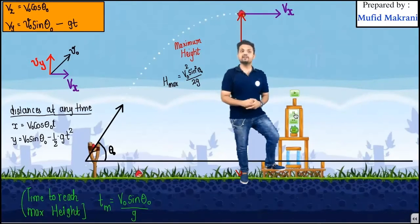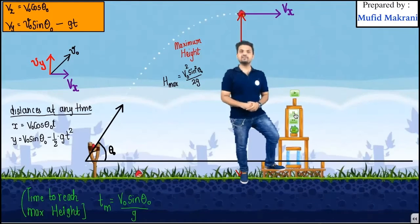y is equals to v naught sine theta naught t minus half gt square.